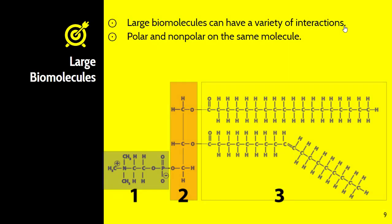Large biomolecules can have a variety of interactions. If you look at this phospholipid, number three is very nonpolar, two are slightly polar, and one is very polar. Large biomolecules can have a variety of different polarities. This plays a huge role in the type of intermolecular forces made, the shape of the molecule, and its biological function. Phospholipids play an important part in the cell membrane as part of the phospholipid bilayer.